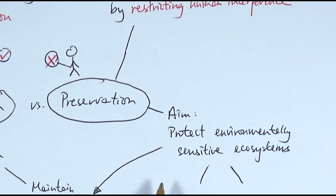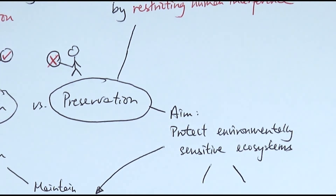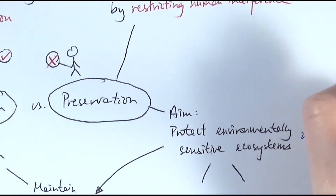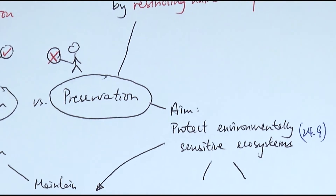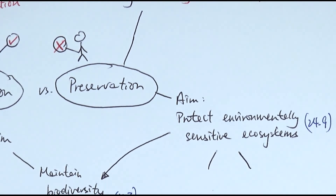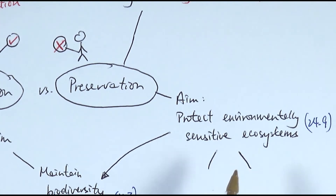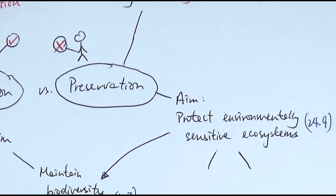The aim of preservation is usually applied to protect environmentally sensitive ecosystems. There is a whole chapter — chapter 24.9 — talking about the different types of environmentally sensitive ecosystems. Obviously, conservation is also used for these places; it really depends on how sensitive the ecosystem is. These are places that can be very easily influenced by any changes, whether biosphere factors or humans coming into those places and causing an effect.